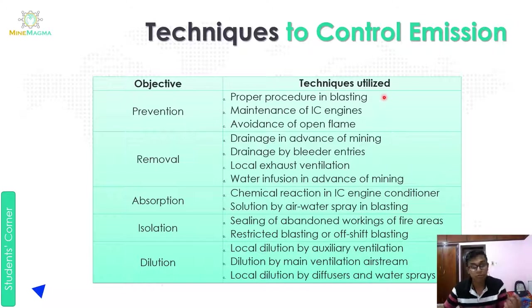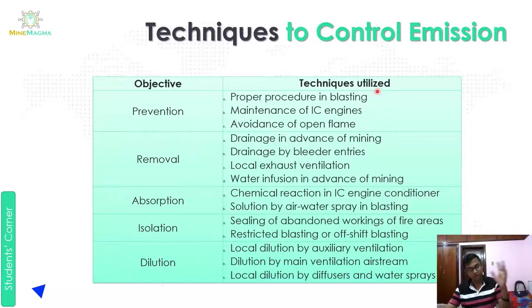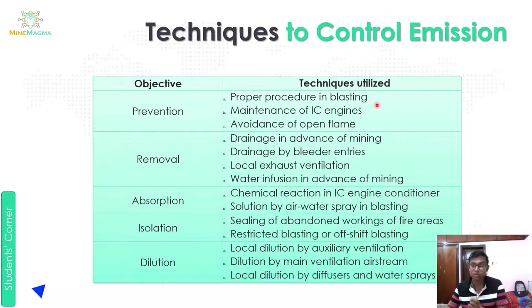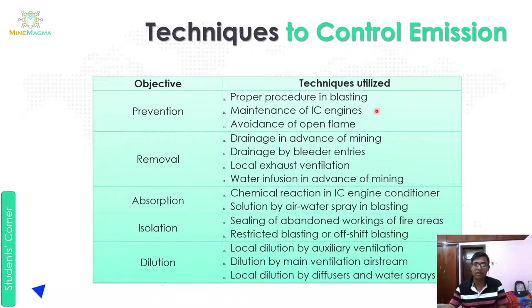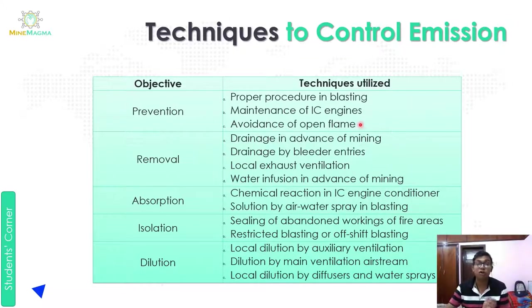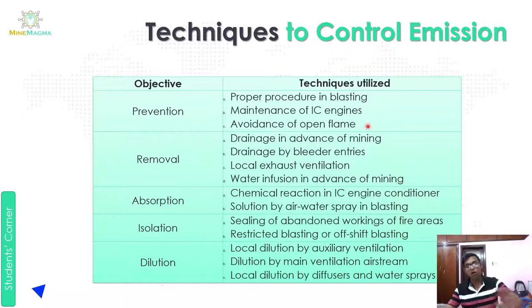Under prevention, the first technique is proper procedure in blasting — if we follow proper blasting procedure, we can control gas emission. Second is maintenance of IC engines, which are maintained well so that they don't produce excess emissions. Third is to avoid and stop open flames, so that gas emissions do not occur.